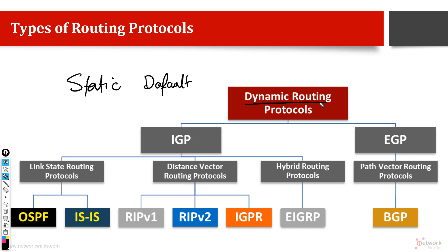Routing protocols are divided into two broad categories. One is called IGP, Interior Gateway Protocol. The second one is called EGP, Exterior Gateway Protocol. IGP means the routing protocols which are used within one autonomous system — within one network like Vodafone, MTN, or British Telecom — under a single management domain. EGP are the protocols which run between different networks.